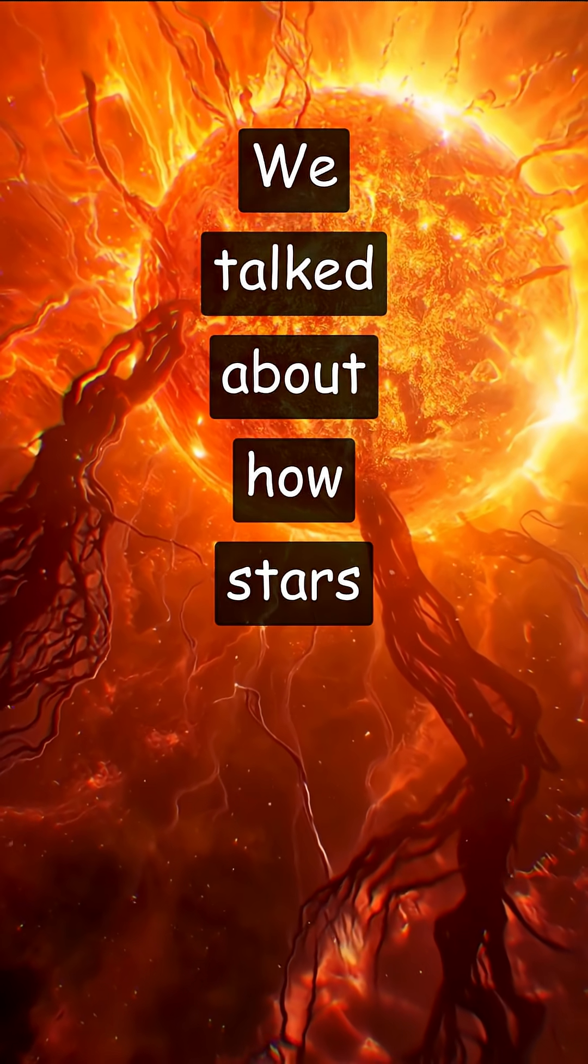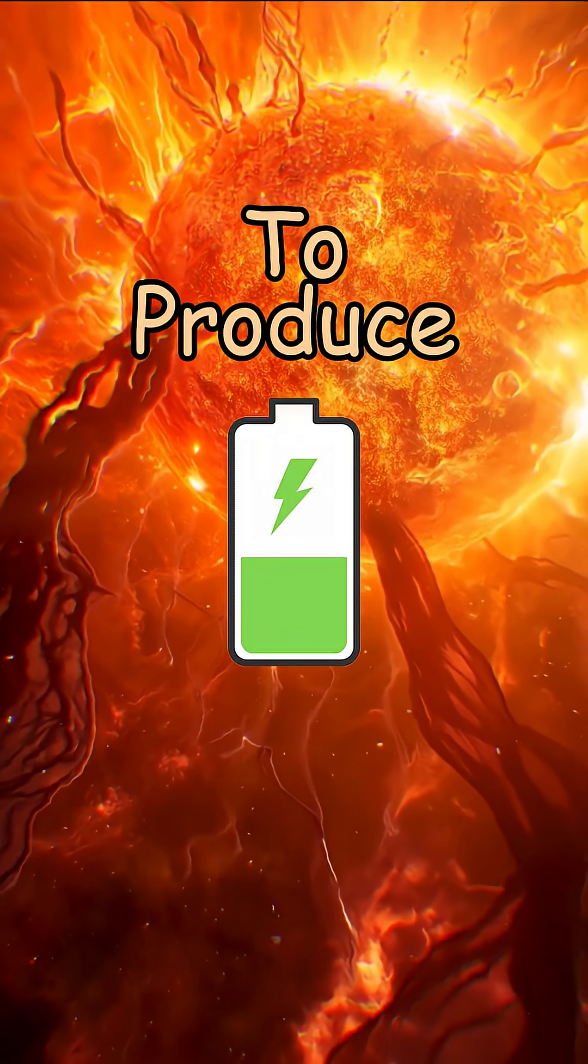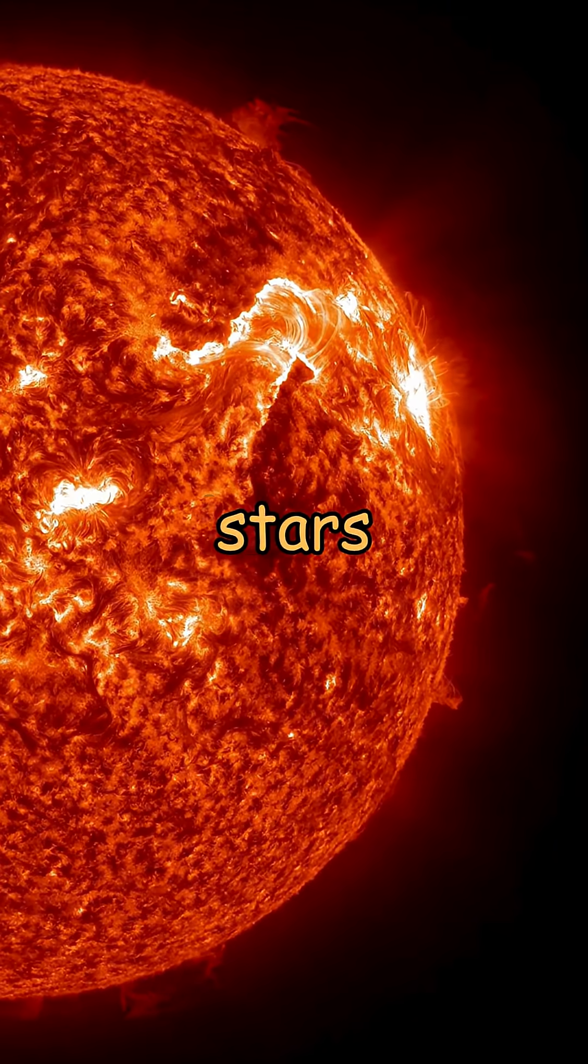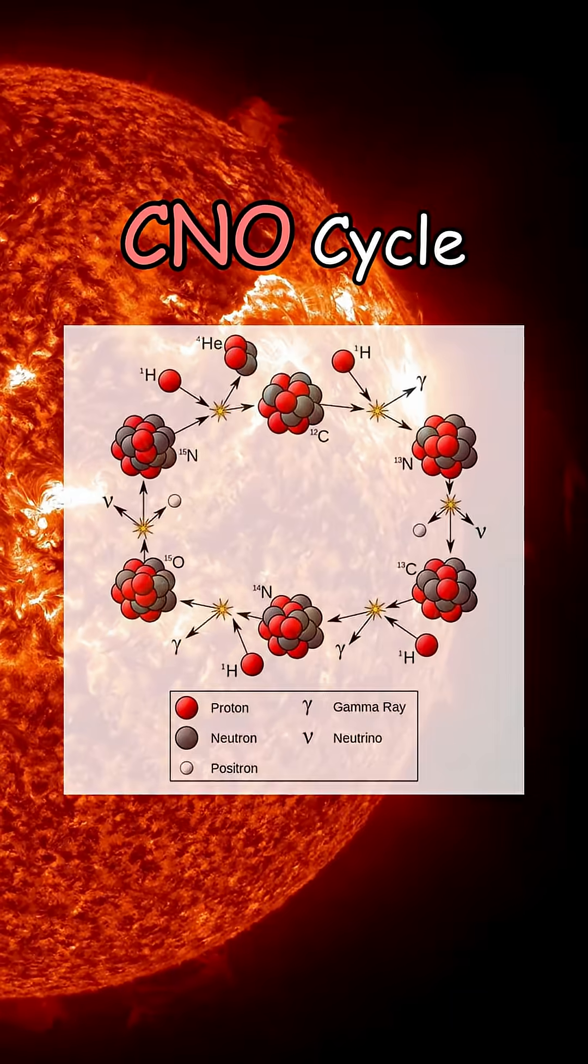In our previous video, we talked about how stars that are similar in size to our sun use the proton-proton chain to produce energy. But massive stars that are hotter and heavier rely on a more powerful process called the CNO cycle.